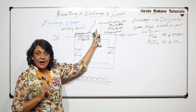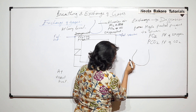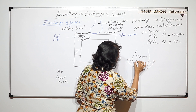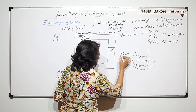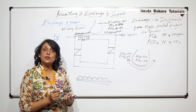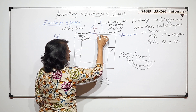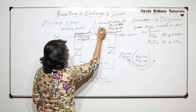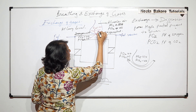Looking at the detailed diagram: this is the alveolus and this is the capillary. In the alveolar air, PO2 is 104 and PCO2 is 40. In the blood arriving at the capillary, PO2 is 40 and PCO2 is 45. So we now compare these two areas to determine the direction of diffusion.